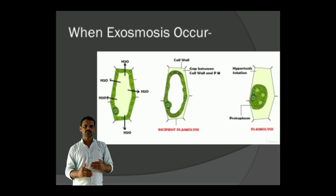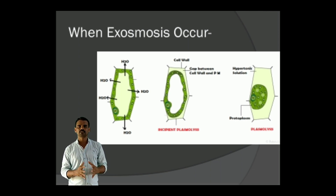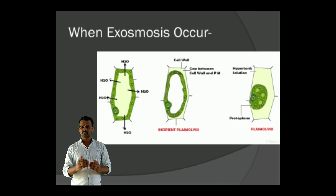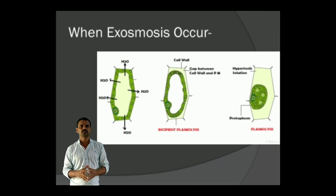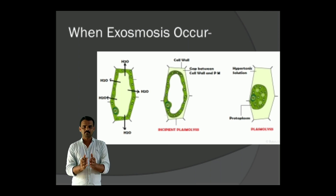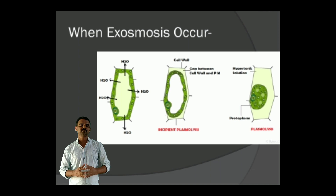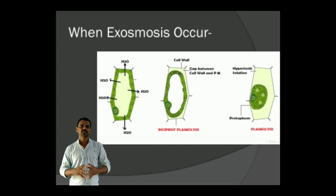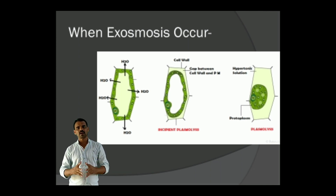If the concentration of the external solution is more, or if the solution is more hypertonic, this shrinking continues and a stage comes where the protoplasm appears as a ball-like structure at the center. This is complete Plasmolysis. The gap between the Plasma membrane and cell wall is filled with hypertonic solution.